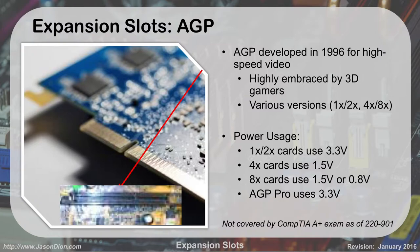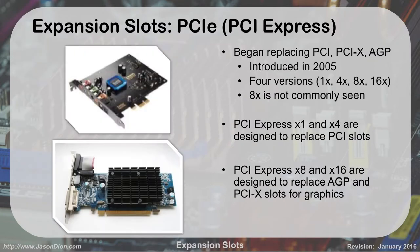PCIe stands for PCI Express. It began replacing all the old stuff in 2005. There are four versions: 1X, 4X, 8X, and 16X. You won't see 8X very commonly. Most motherboards are going to have 1X, maybe a 4X, and they're going to have 16Xs. The X talks about how big the actual slot is. The 1X card has very little nubs making contact; a 16X card is much, much longer.